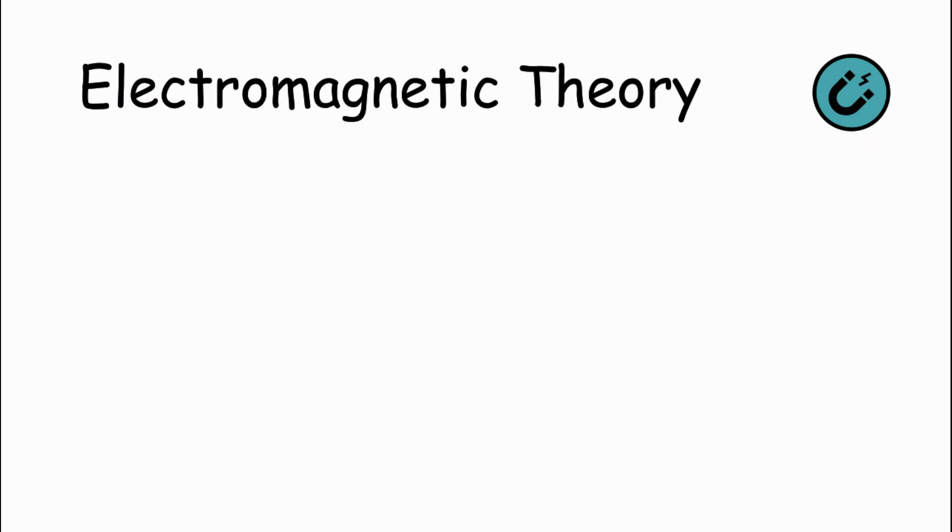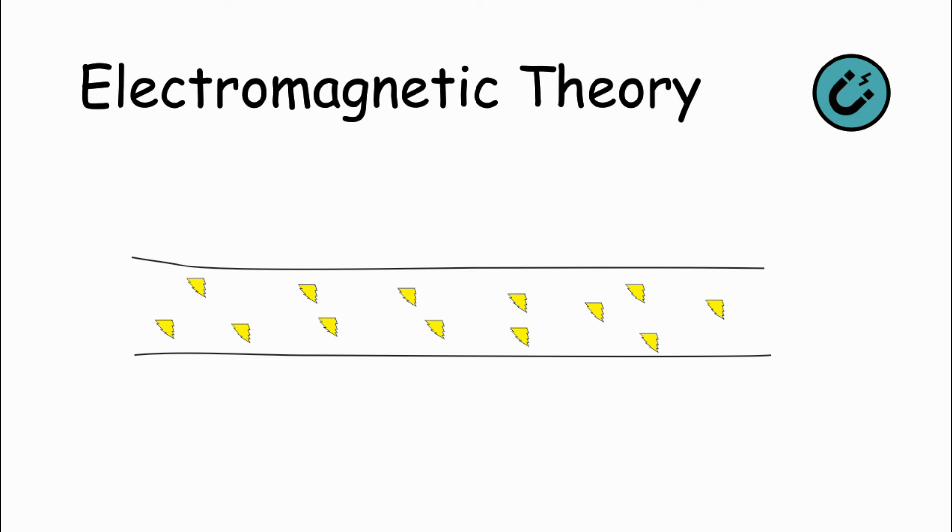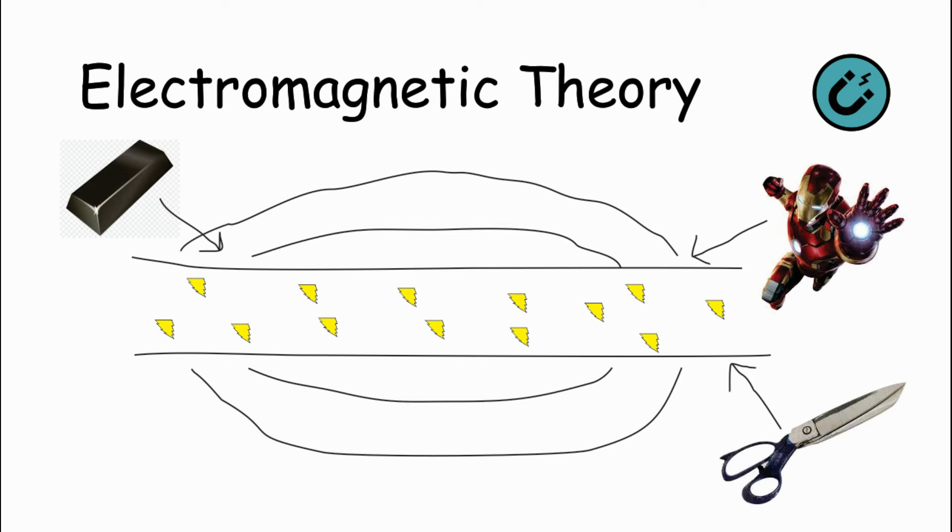Electromagnetic Theory: Electromagnetism is a fundamental theory in physics that explains how electricity and magnetism are related. According to electromagnetism, when electric charges move, they create magnetic fields, which are invisible forces that can push or pull objects with magnetic properties.